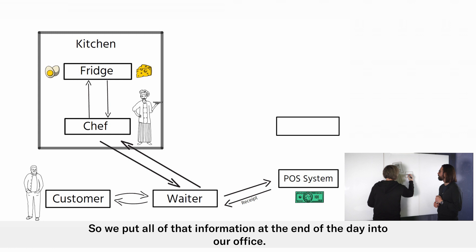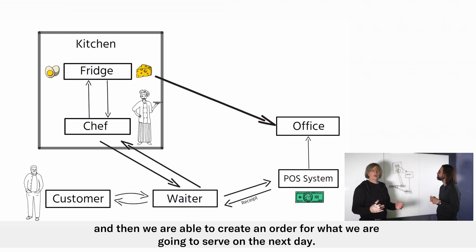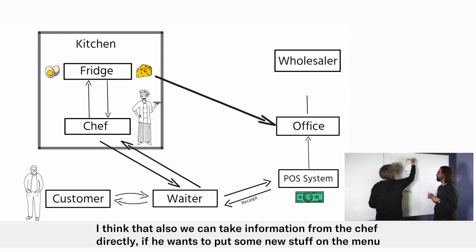So we put all of that information at the end of the day into our office. Now we also take some information on stock levels from our fridge. And then we're able to create an order for what we're going to have also for the next day. So we then create an order that goes to our wholesaler and distributor.